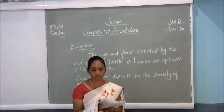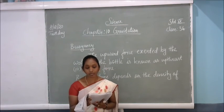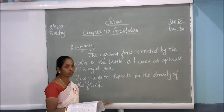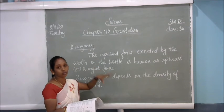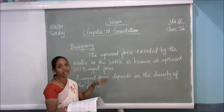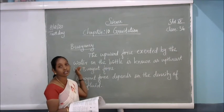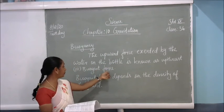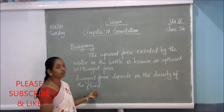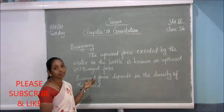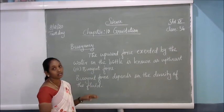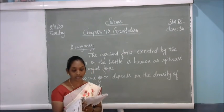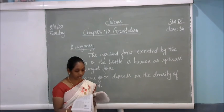The upward force exerted by the water on the bottle is known as upthrust or buoyant force. The downward force is less compared to the upward buoyant force — that is the reason the object floats on the surface of the water. This type of buoyant force depends on the density of the fluid. If the density is more, the object can sink in the water compared to the water density. If the object's density is very less compared to the water, the object cannot sink and will float on the water.